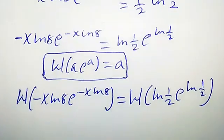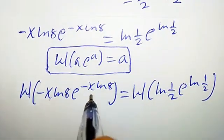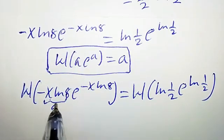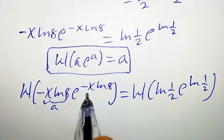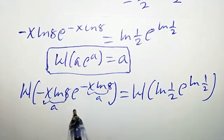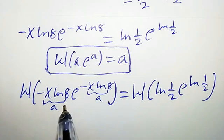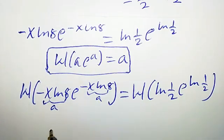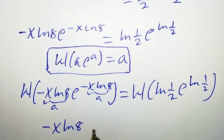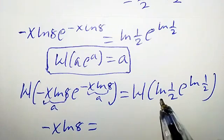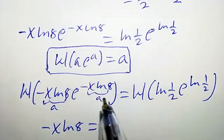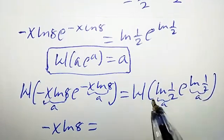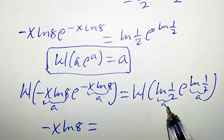By comparing the left hand side with the formula, you will observe that a is negative x ln 8. So this left hand side will become negative x ln 8. Likewise, comparing the right hand side, our a is ln half. So this whole expression becomes ln half.